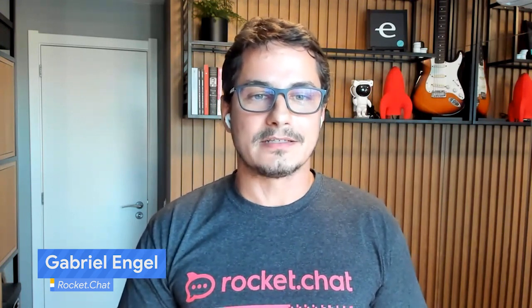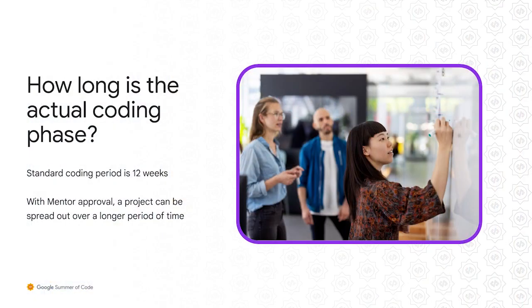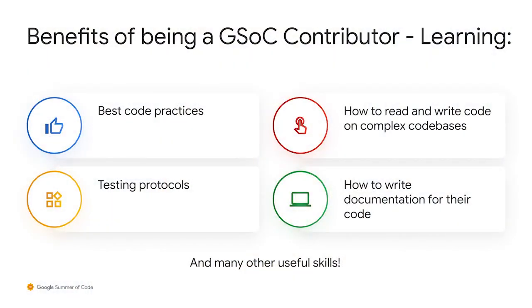The earlier a potential participant makes contact with the open source project and interacts with the community to show their interest in the project, the better their chances of being selected to be a GSOC contributor. The standard coding phase is 12 weeks. However, to allow more flexibility for GSOC contributors, the project can be spread out over a longer time with mentor approval. GSOC contributors learn many things throughout the program, including best code practices, how to read and write on complex code bases, testing protocols, and how to write documentation for their code.